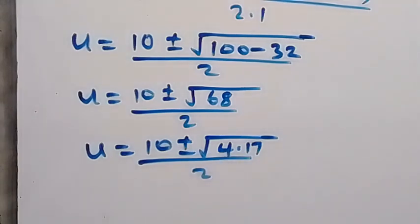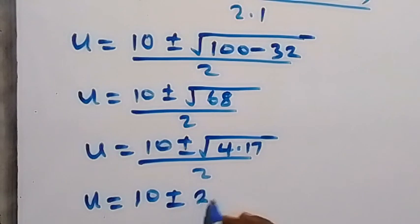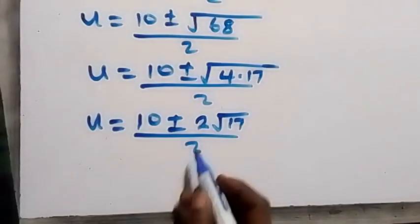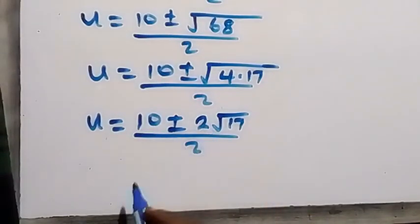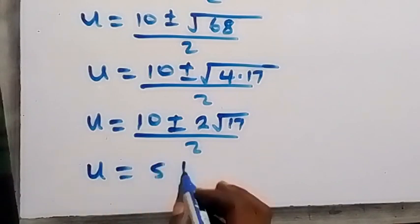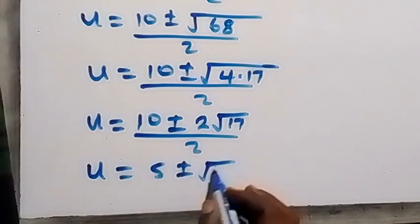And here we have u to be equals to 10 plus or minus 2 root 17 over 2. And we can reduce this, 2 goes in 10 and 2 also goes in 2. We have u equals to 5 plus or minus root 17.